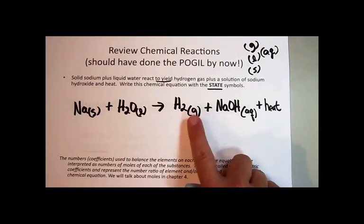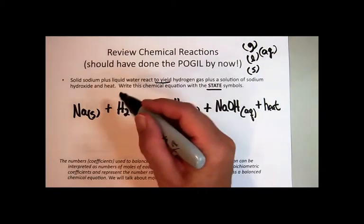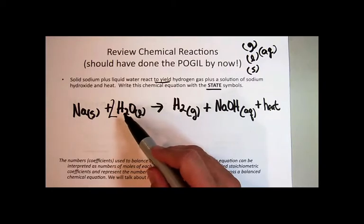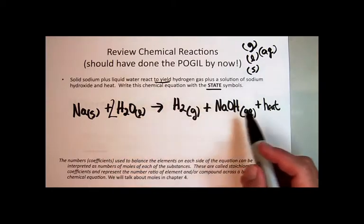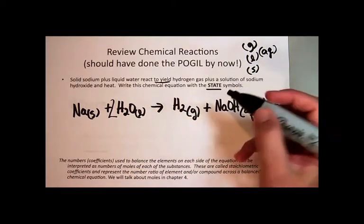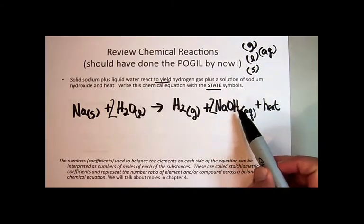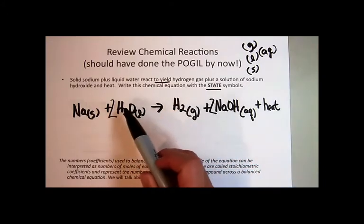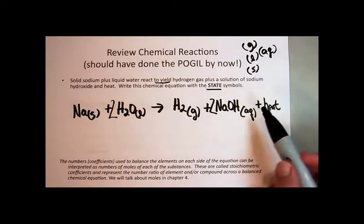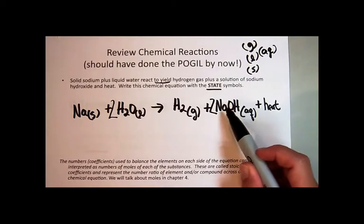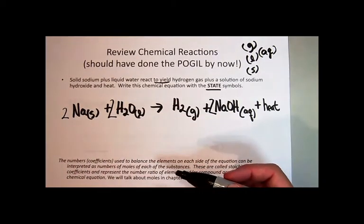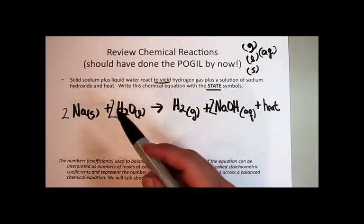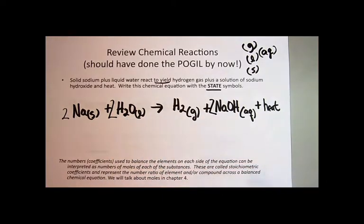To fix the hydrogen imbalance, I'll put a coefficient in front of the water — it's the only place hydrogen appears on the left. Starting with 2 gives four hydrogens on the left. Then placing a 2 in front of sodium hydroxide gives two hydrogens from the OH plus two from H₂, totaling four — that works. But now sodium is unbalanced, so I put a 2 in front of sodium. That balances everything. This process is called balancing by inspection.